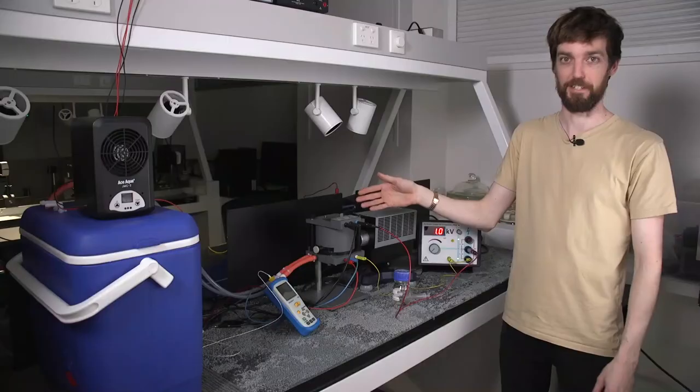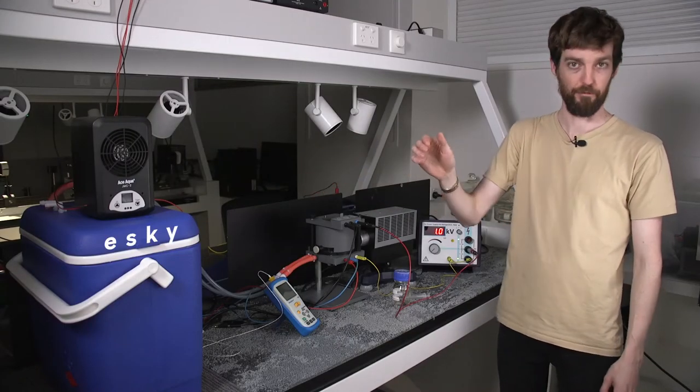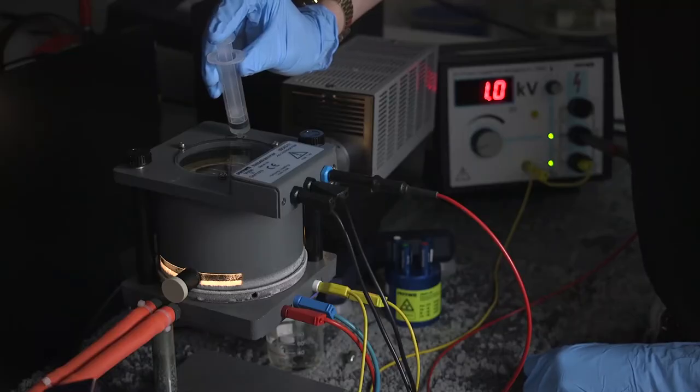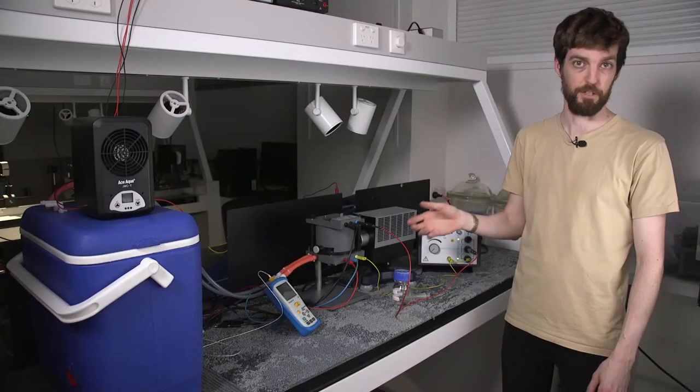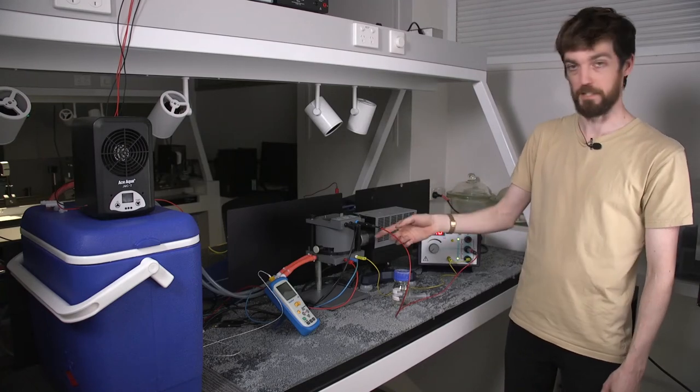So here we have the cloud chamber which contains vaporized ethanol that's cooled by water running from the esky. Inside the chamber you'll be able to observe particle production from radioactive sources as well as from cosmic rays from the Sun.